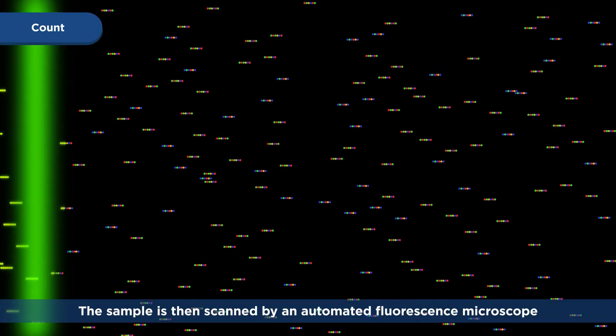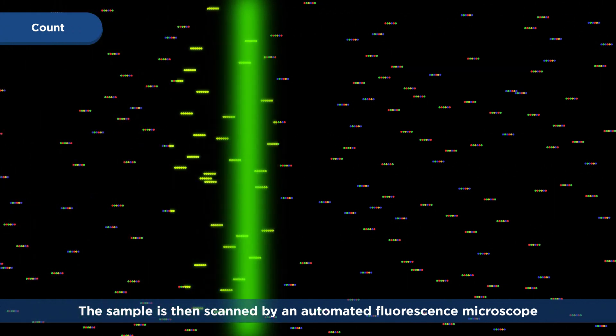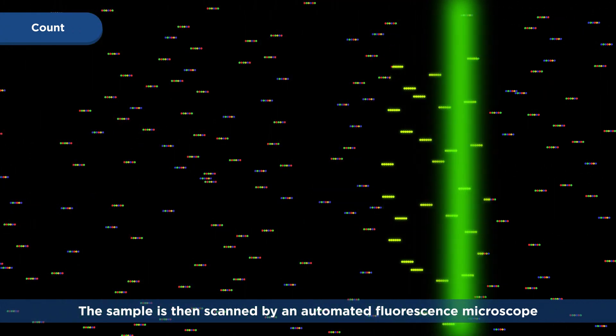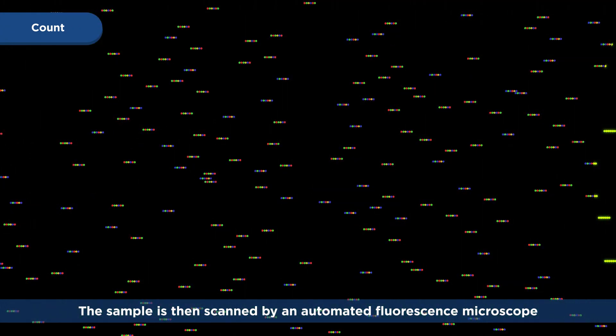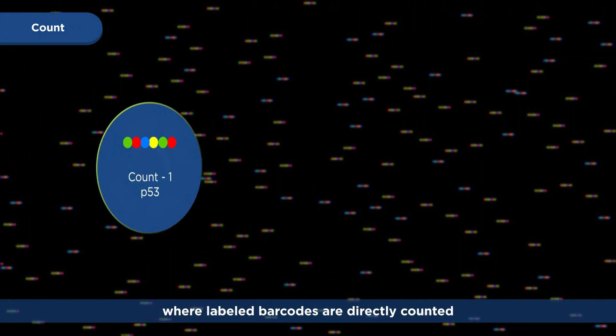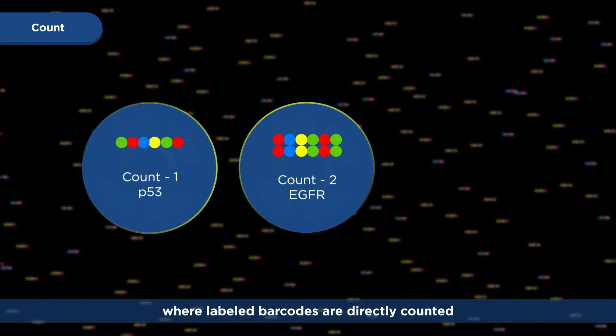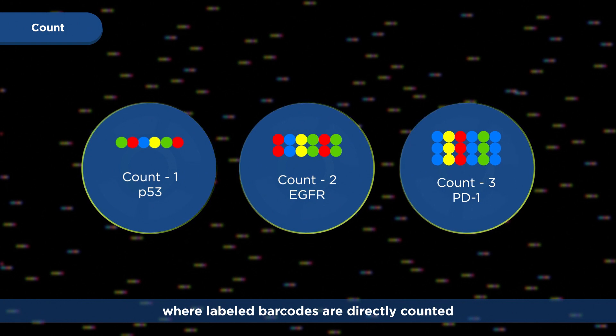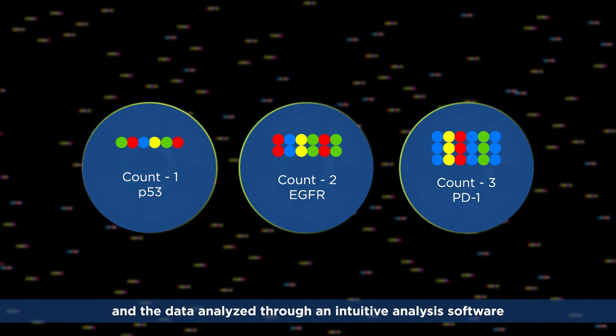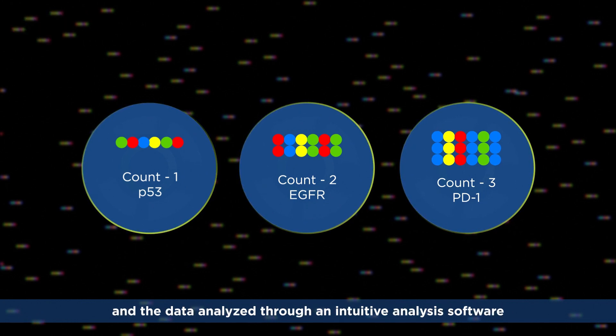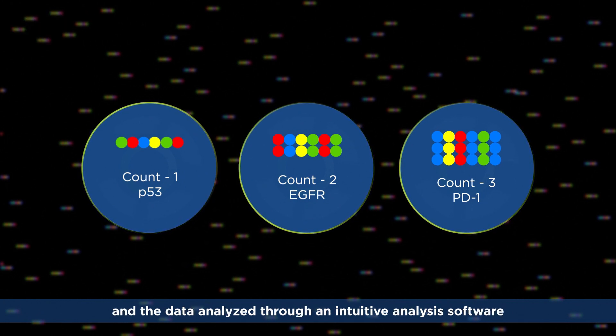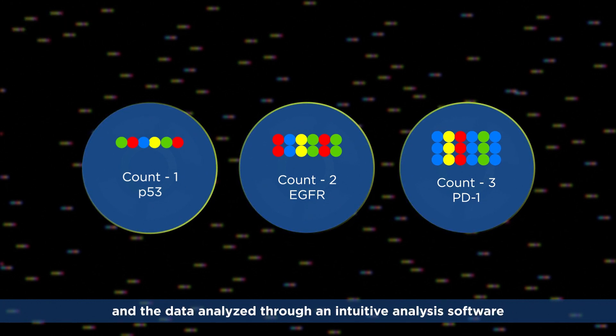These complexes are immobilized and aligned on the imaging surface. The sample is then scanned by an automated fluorescence microscope, where labeled barcodes are directly counted and the data analyzed through an intuitive analysis software.